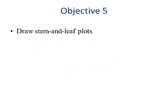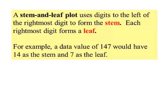Lesson objective number five, stem and leaf plots. A stem and leaf plot uses digits to the left of the rightmost digit to form what's called the stem. Each rightmost digit forms a leaf. For example, a data value of 147 would have 14 as the stem and 7 as the leaf.